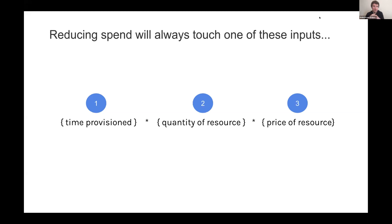Looking at each variable: the amount of time something is provisioned is the amount of time your cloud provider is actually billing you for that resource. For example, cluster auto-scaling would allow you to shorten that time to just the period where you actually need those resources.